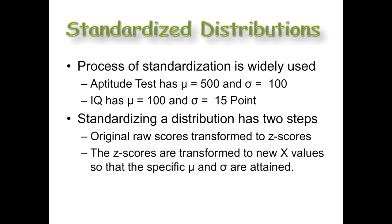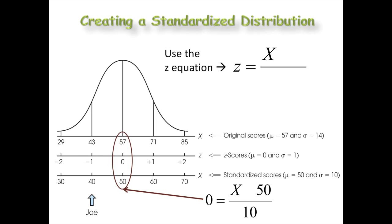This process has two steps: you take the original raw score and transform it into z-scores, and those new z-scores are then transformed into new raw scores or x values. For example, 57 being the average gets converted to a z-score of zero. The new standardized mean uses cleaner numbers — in this case, 50 and 10.